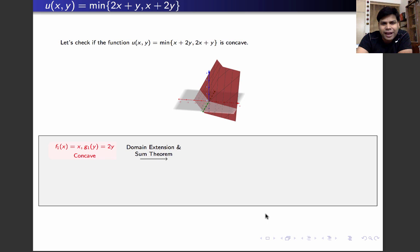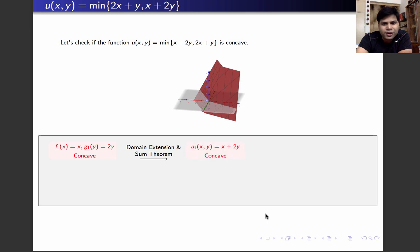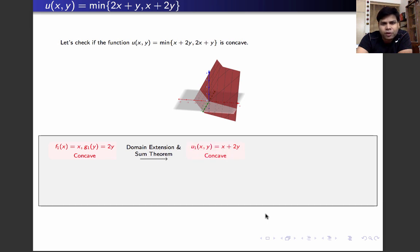Using the domain extension and the sum theorem, we'll get that the sum of these two functions will be a concave function. So u1(x,y) equals x plus 2y will be a concave function. Similarly, we're going to get u2(x,y) equals to 2x plus y as a concave function.